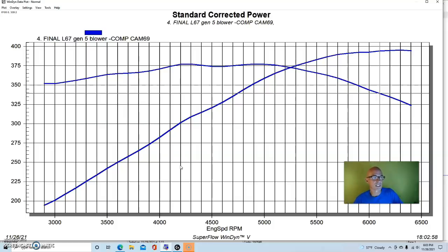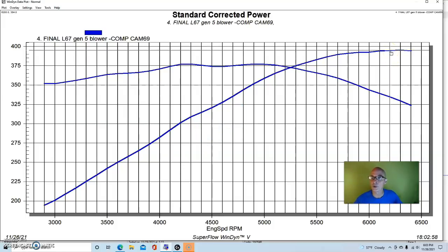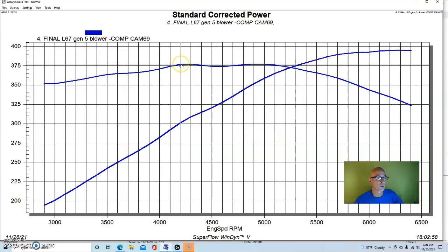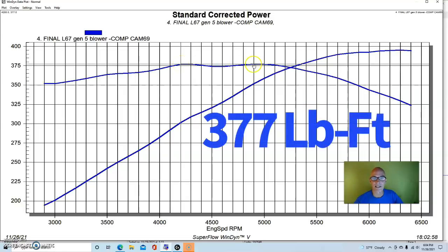And run on the L67, the cam combination with the 3.2-inch pulley, which by the way, you can take a look at that video. It's up. You can see how much the boost dropped when we put the cam in because we made more power at a lower boost, which is always good. So, with the cam shaft, we made 395 horsepower. Peak torque was 377 foot-pounds.